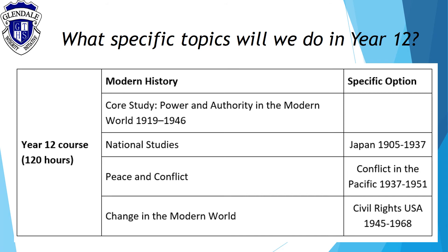The Year 12 course has four topics. The core study, Power and Authority in the Modern World 1919–1946, looks at European dictators after World War I, and the core focus of that topic is Hitler and Nazi Germany.